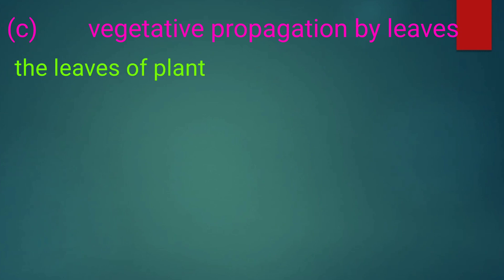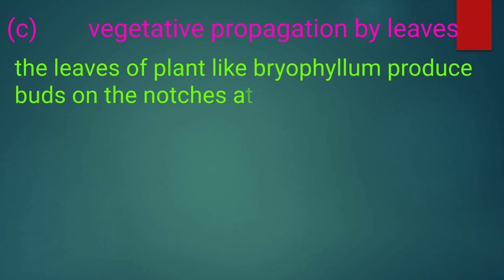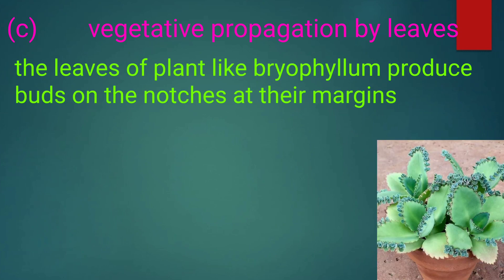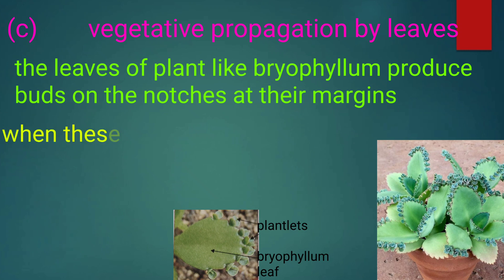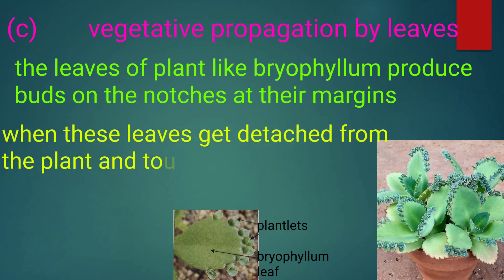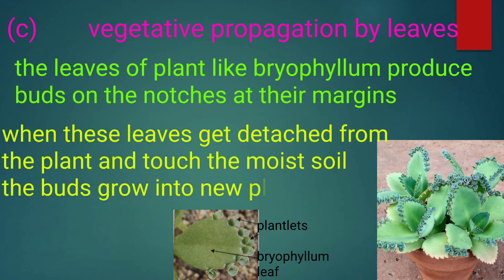The buds grow into a new plant. Vegetative propagation by leaves. The leaves of plants like Bryophyllum produce buds on the notches at their margin. When these leaves get detached from the plant and touch the moist soil, the buds grow into new plants.